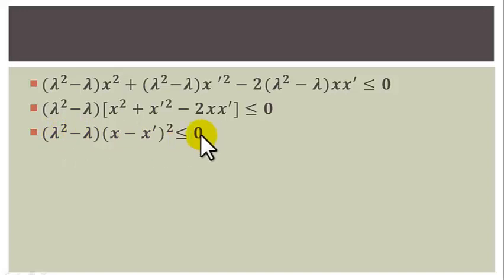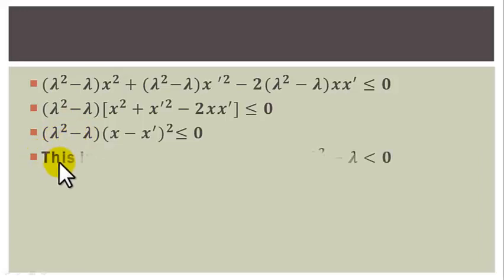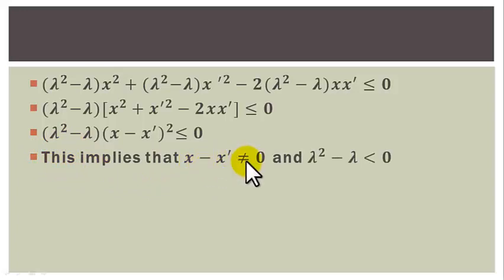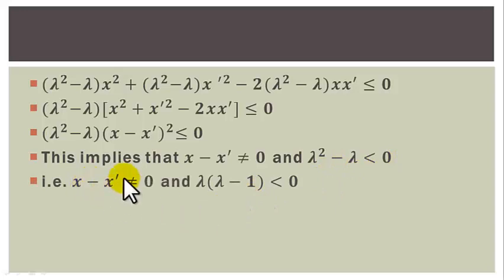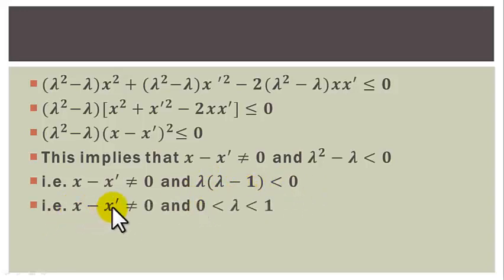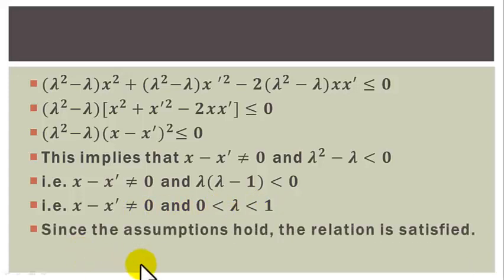Since (x minus x')² can never be negative, the factor (lambda² minus lambda) must be negative or zero. This implies x minus x' is not equal to zero and lambda squared minus lambda is less than zero, that is lambda(lambda minus 1) is less than zero. Solving this inequality gives x not equal to x' and 0 less than lambda less than 1. Since these assumptions are satisfied, the relation holds and the result is proved — f(x) equals x squared is indeed a convex function.